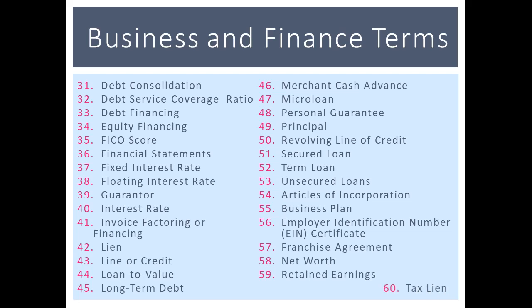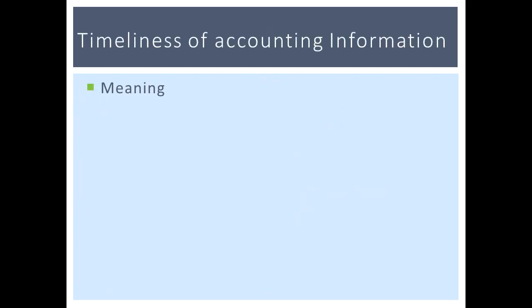Retained earnings represents any profits you earn that are retained in the business. A tax lien means if your business fails to pay taxes owed to a governing entity, you may find your assets seized by the claim of a tax lien — the government can seize your assets for liquidation to resolve the tax debt and also charge penalties on the amount owed.